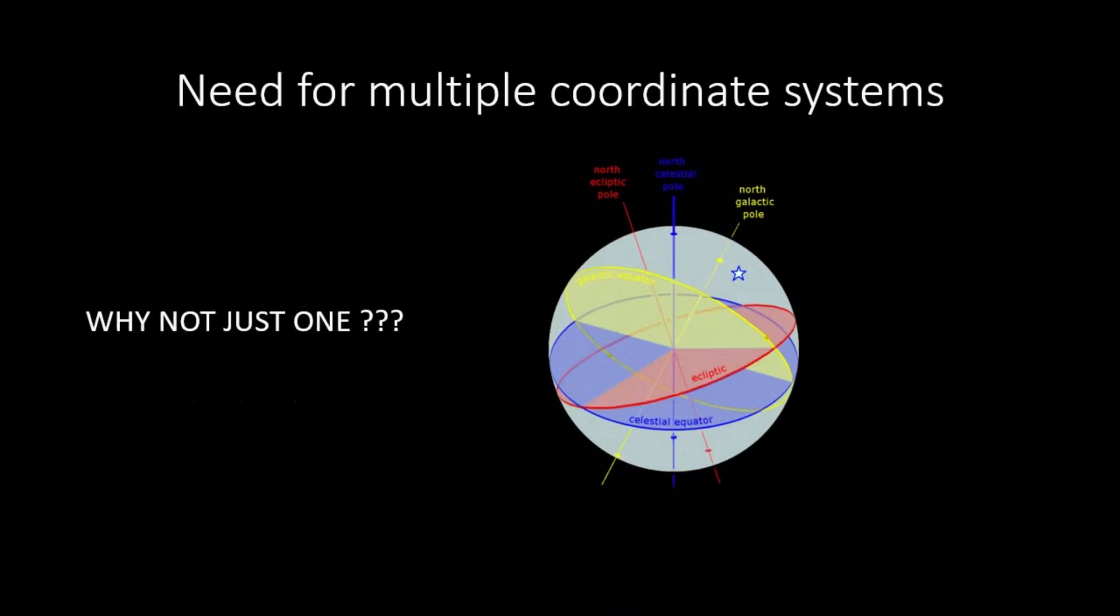Need for Multiple Coordinate Systems. Now that we understood coordinate systems, we need to understand why would we ever need multiple coordinate systems in any application? Why not just work with a single coordinate system?